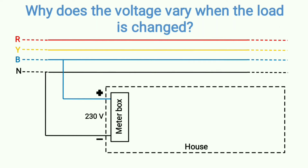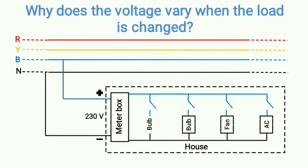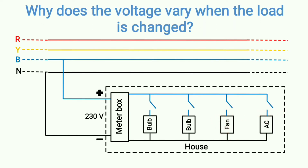As you can see, one phase and one neutral enter into our house. In our houses, loads are connected in parallel — that means across every load the voltage is the same, which is 230 volts AC. There are different types of loads: two bulbs (light loads), an electric fan, and an AC unit.